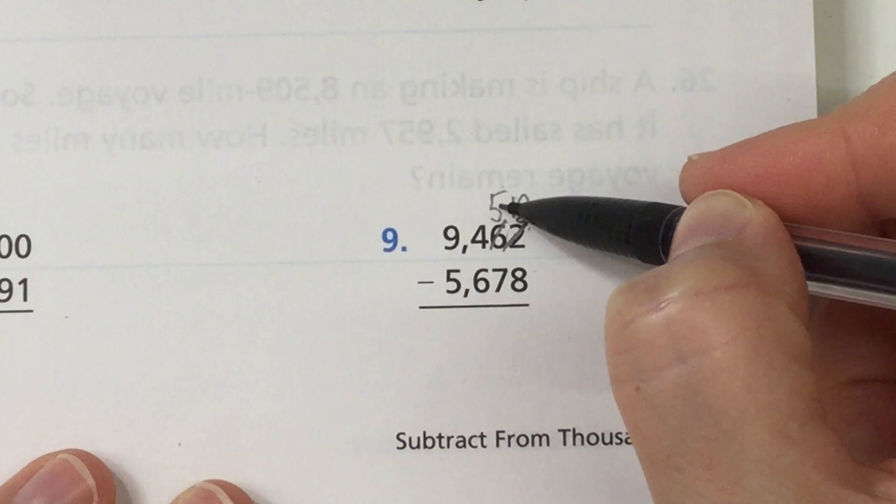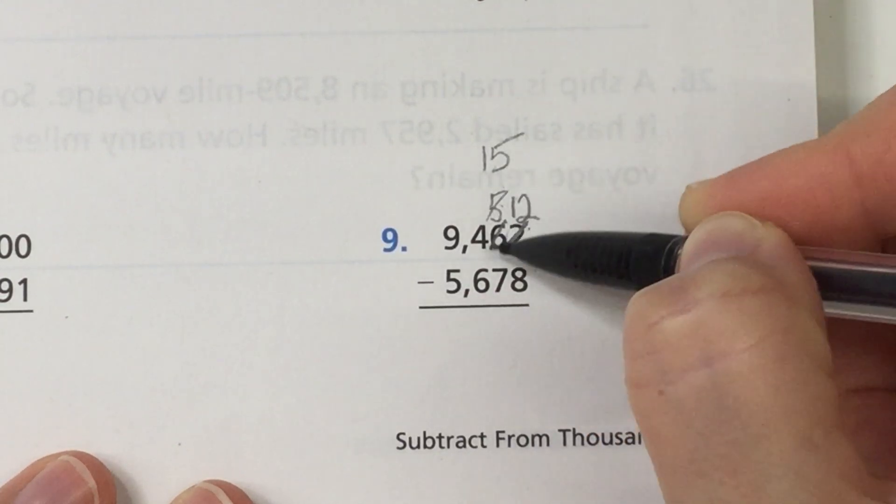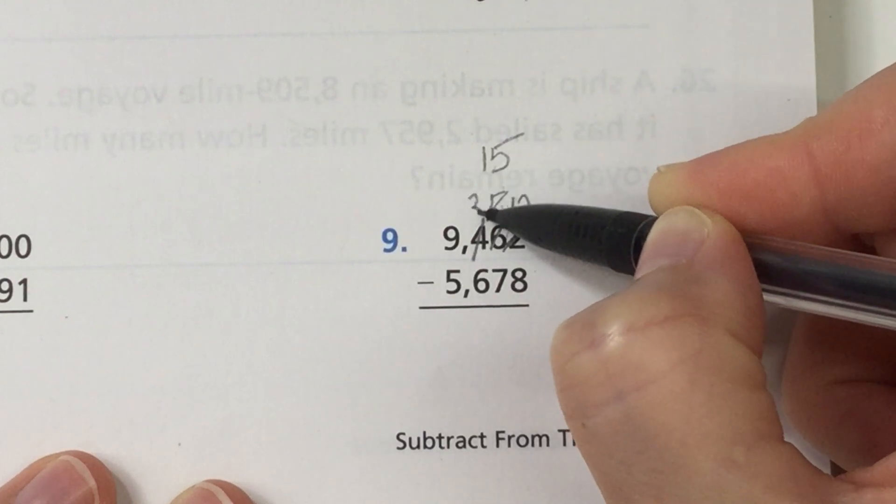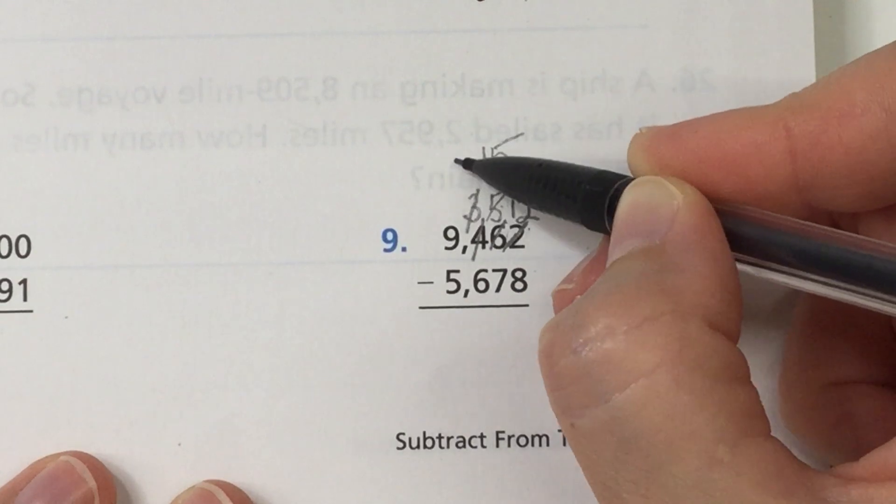This 5 now, 5 minus 7 is not possible. So 5 becomes a 15. 4 goes down to a 3. 3 minus 6 is not possible. So the 3 becomes a 13.